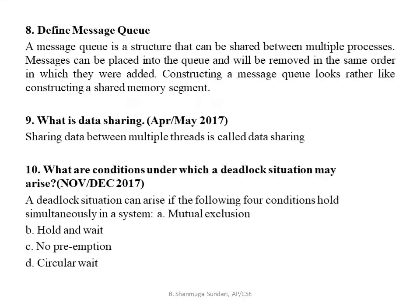Define message queue: a message queue is a structure that can be shared between multiple processes. Messages can be placed into the queue and will be removed in the same order in which they were added — similar to a shared memory segment. Data sharing means sharing data between multiple threads.